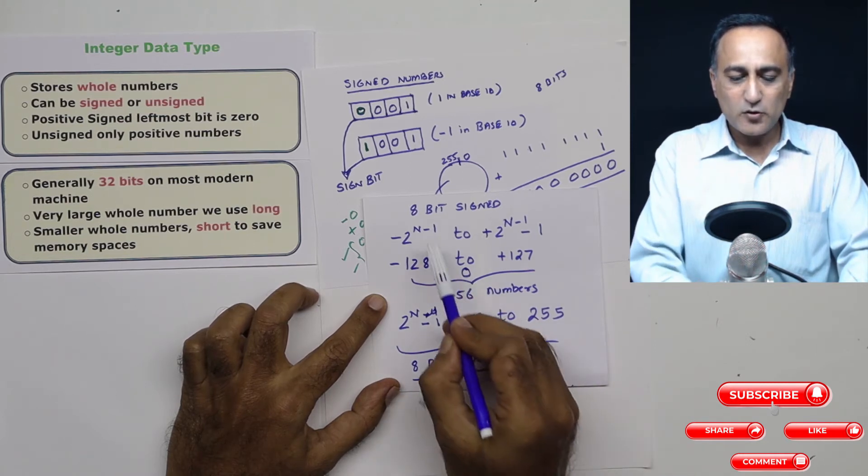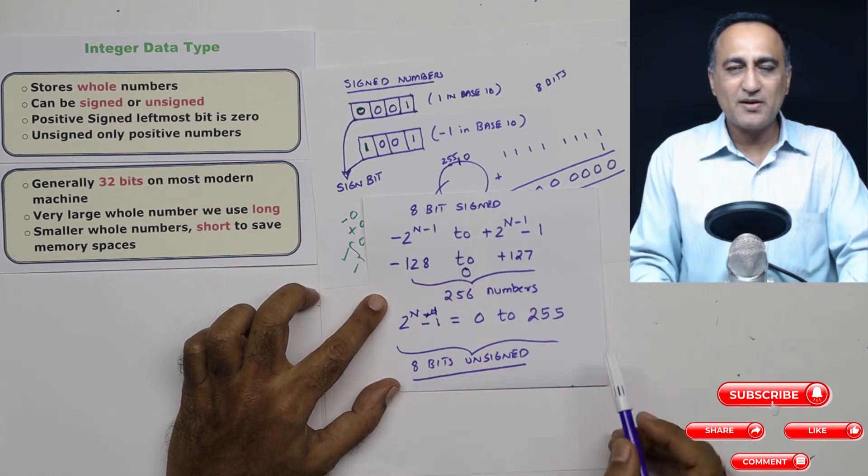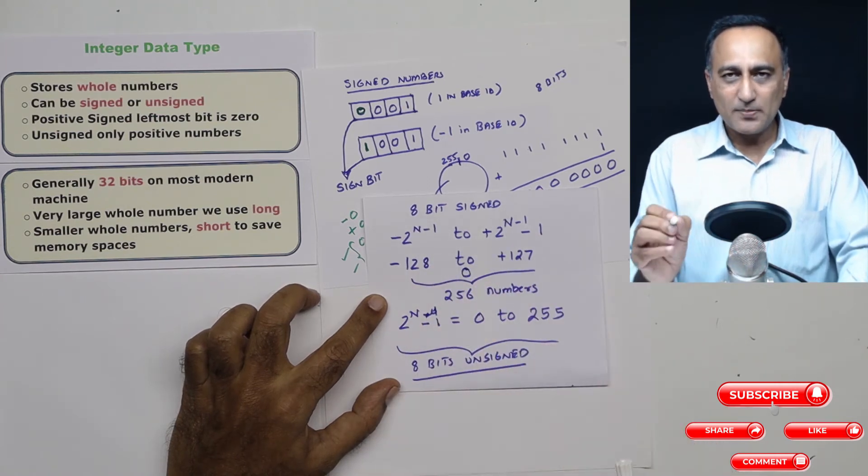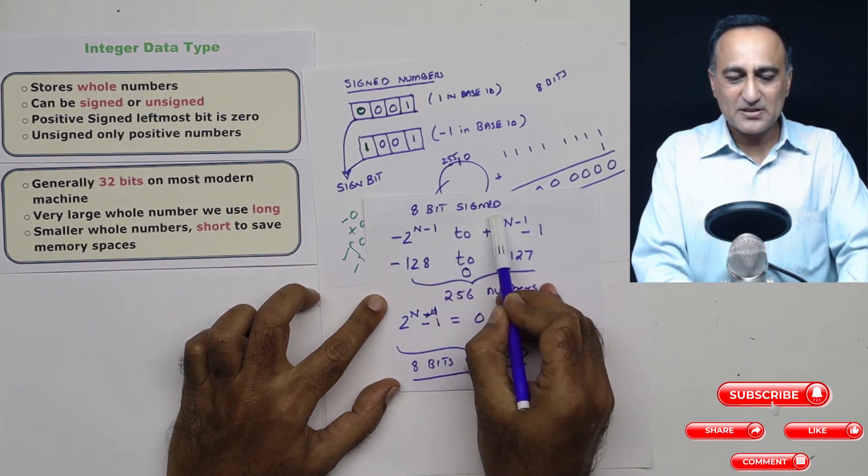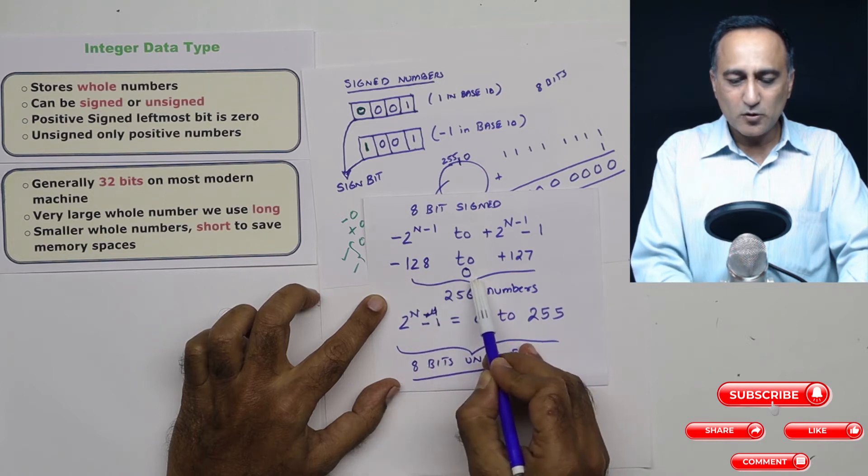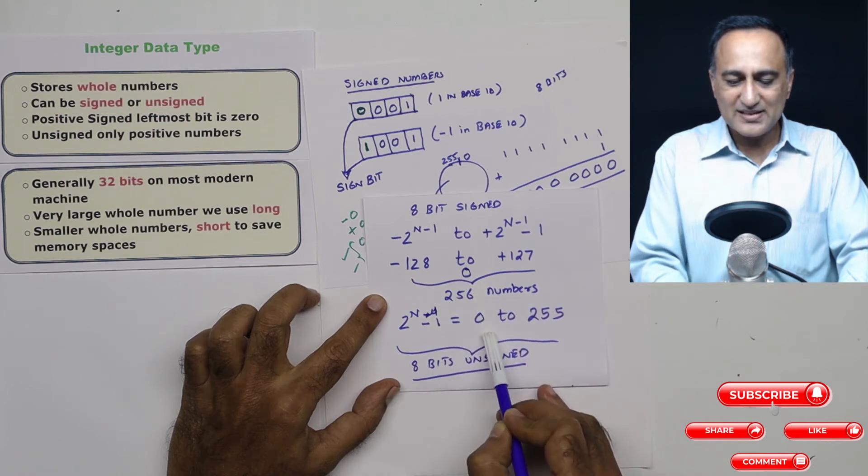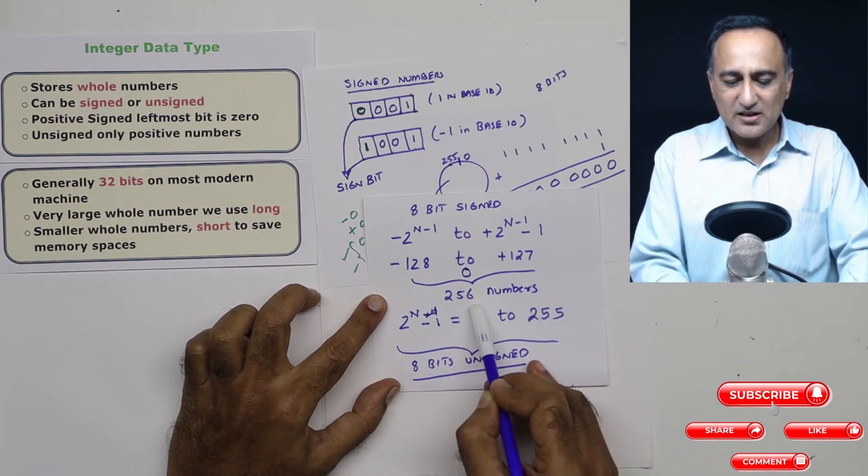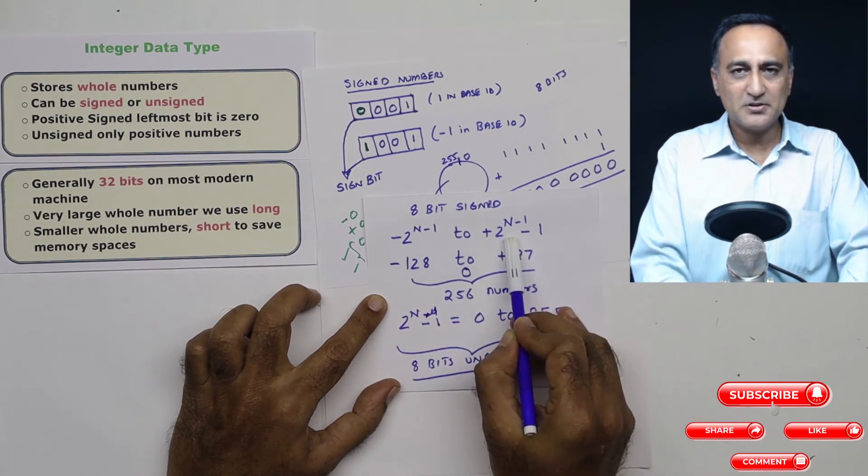But suppose I had to use one bit for the sign, then out of the eight bits, only seven bits will be available for me. So if I represent both positive and negative numbers using eight bits signed representation, then the range will be minus 128 to zero to plus 127. Although there will be a total of 256 numbers on both the sides. Here I am only representing zero or positive numbers; here I am representing both positive and negative numbers.